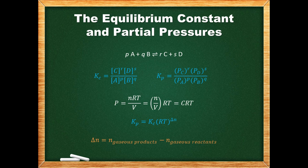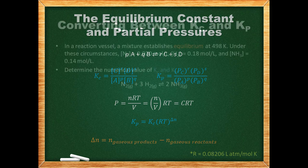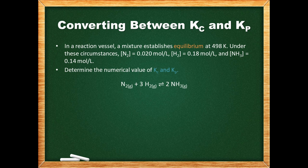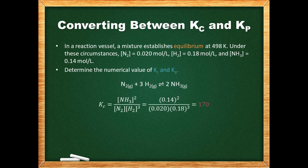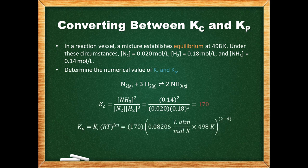We are using units of atmospheres, so the gas constant value we use is 0.08206 L·atm/(mol·K), and we should also be using the Kelvin temperature. In this problem we are given an equilibrium reaction and the gas concentrations, and are asked to determine both K_c and K_p. First we find K_c by writing down the equilibrium expression and plugging in the concentrations. Next we use our conversion expression to find K_p. The temperature is 498 Kelvin and there are two moles of gaseous products and four moles of gaseous reactants, giving us the K_p value.